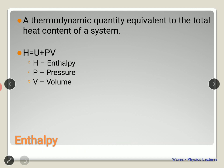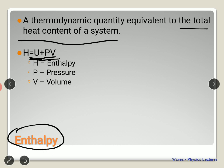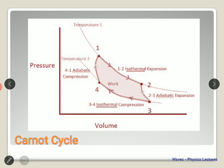Enthalpy is a thermodynamic quantity equivalent to the total heat content of the system — a combination of the internal energy and the work done. Enthalpy is denoted by H, and it equals internal energy U plus P×V, where P is pressure and V is volume.